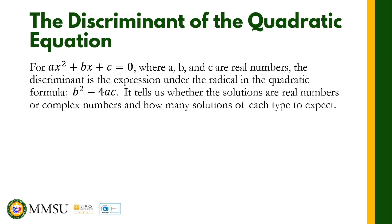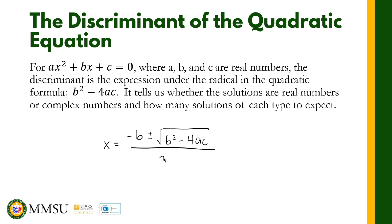The quadratic formula states that the roots of a quadratic equation are x equals negative b plus or minus the square root of b squared minus 4ac, over 2a. The nature of the roots of the quadratic equation is determined by the value under the radical sign: b squared minus 4ac.